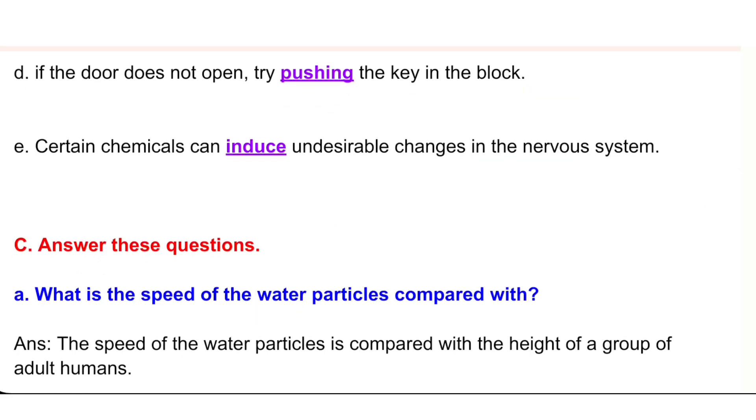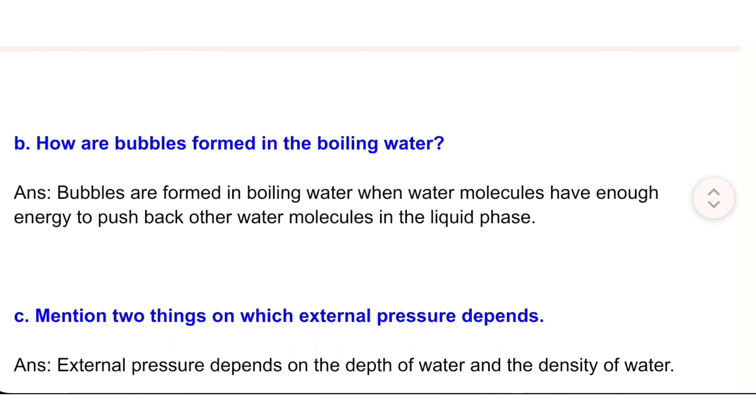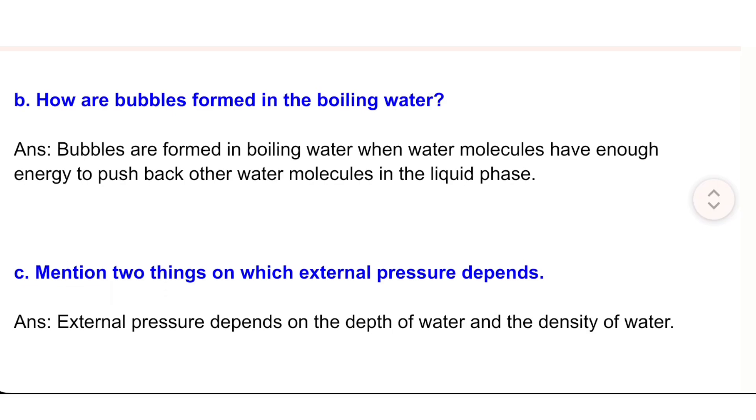C. Answer these questions. a) What is the speed of the water particles compared with? Answer: The speed of the water particles is compared with the height of a group of adult humans. b) How are bubbles formed in the boiling water? Answer: Bubbles are formed in boiling water when water molecules have enough energy to push back other water molecules in the liquid phase.